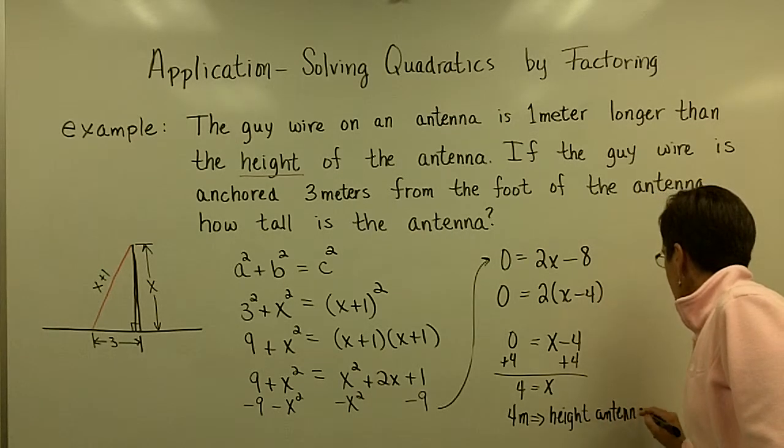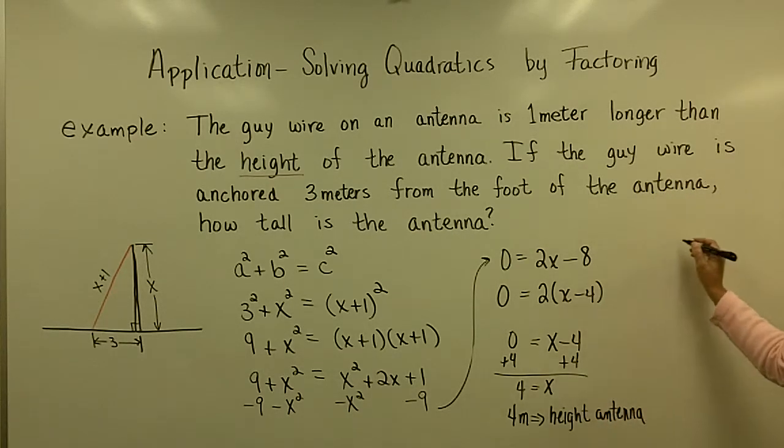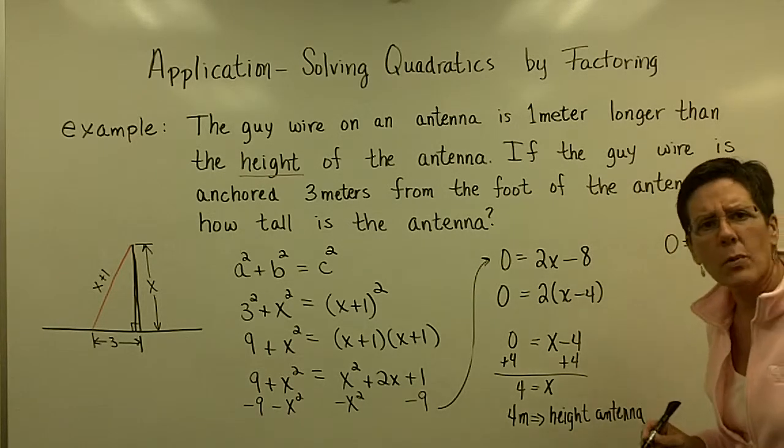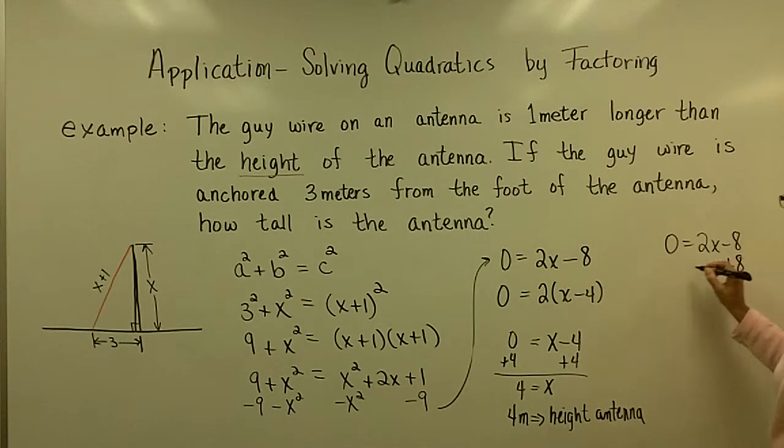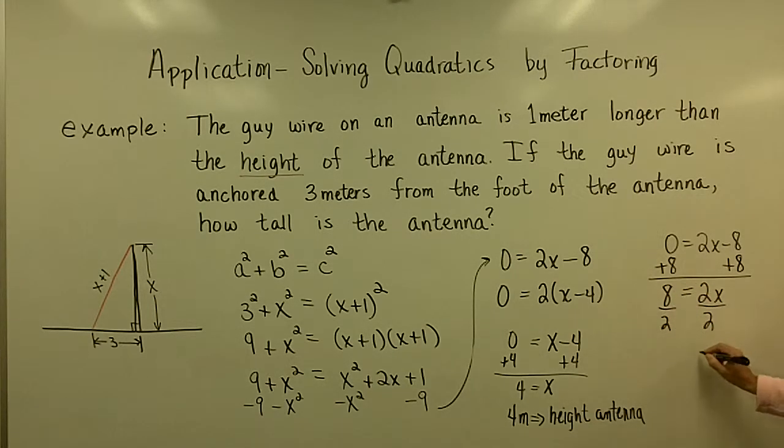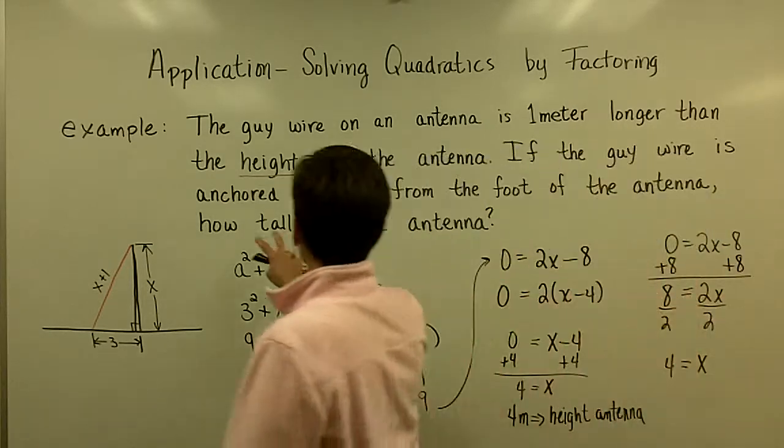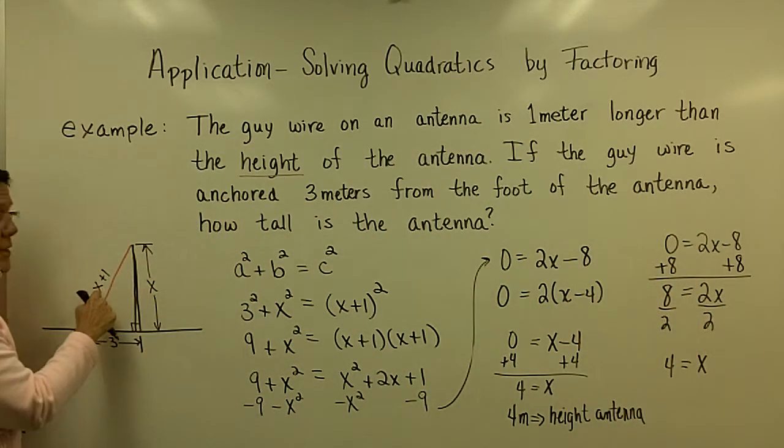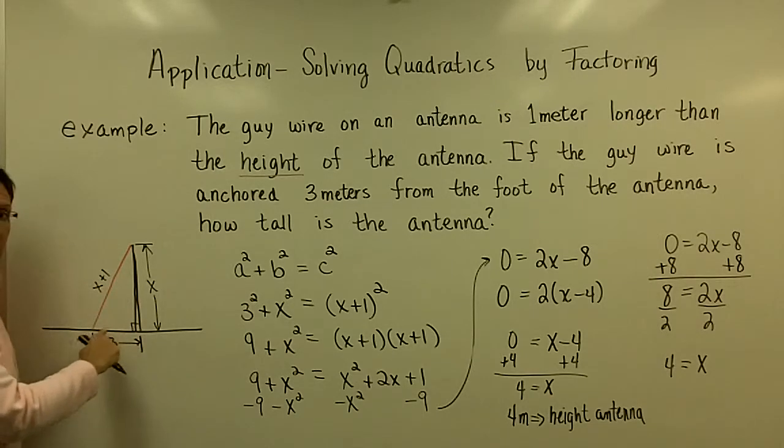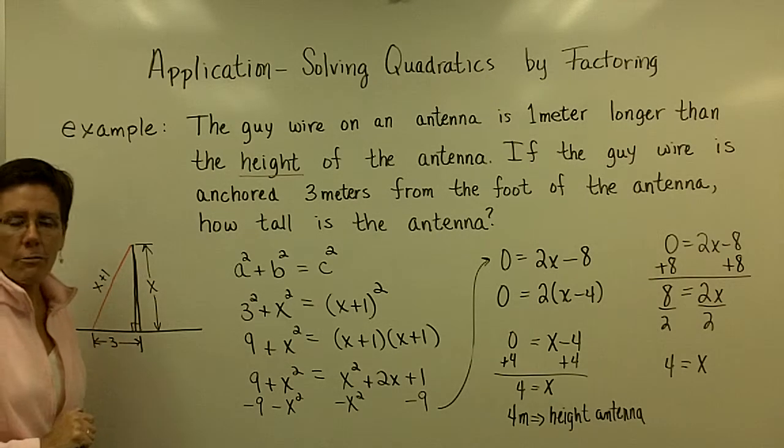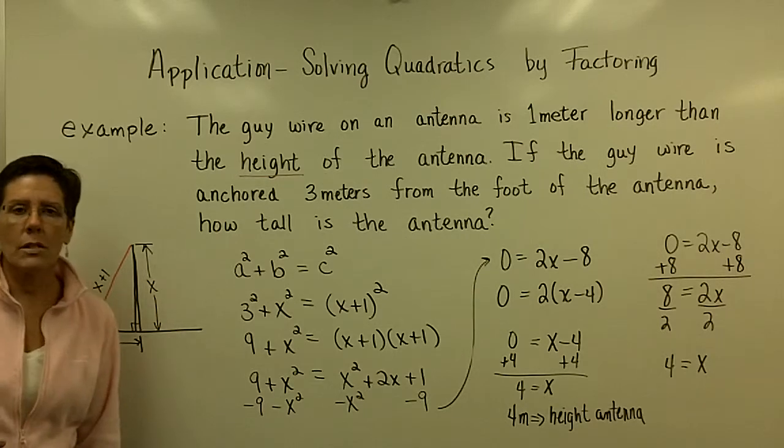Now, if I had decided to not solve this by the zero product rule, if I was sitting over here at zero equals two X minus eight, this is just a linear equation, don't forget, you could have just added eight to both sides of this equation. And then you could divide both sides by two and solve this as you have in the past for a linear equation and find out that X is equal to four as well. That's really all I wanted. I wanted to know how tall the antenna was. It's four meters. This would be five meters with this base being three. This happens to be what's called a 3-4-5 right triangle, kind of commonly used in the construction trades.